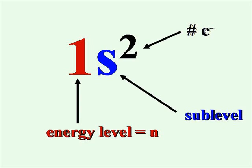In an electron configuration, the number represents the energy level, the letter, in this case S, represents the sublevel, and the superscript number, in this case 2, represents the number of electrons that are filling that sublevel.